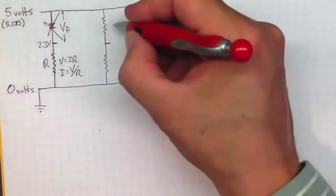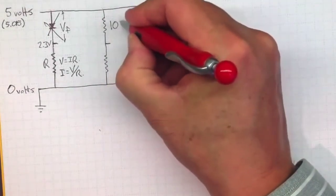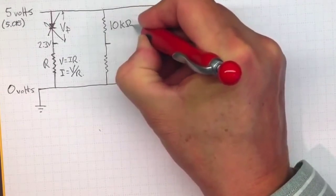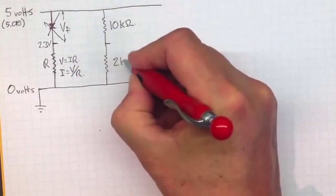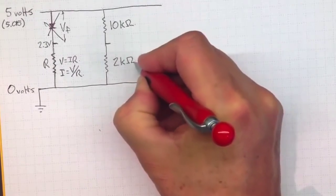Now in the example we did, this was a 10K resistor, 10,000 ohms. And this was a 2,000 ohm resistor.